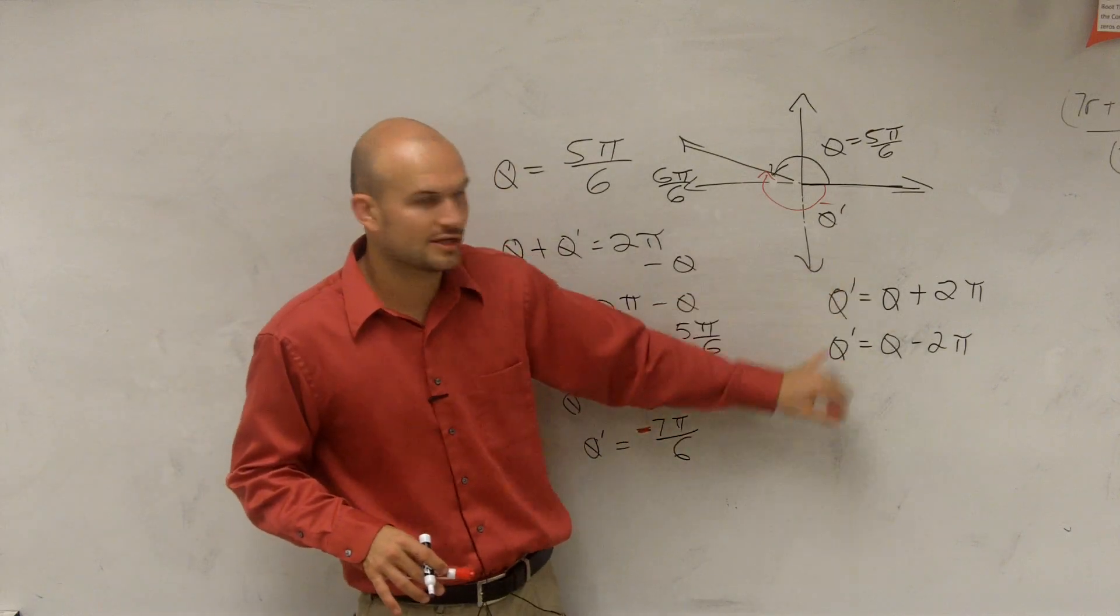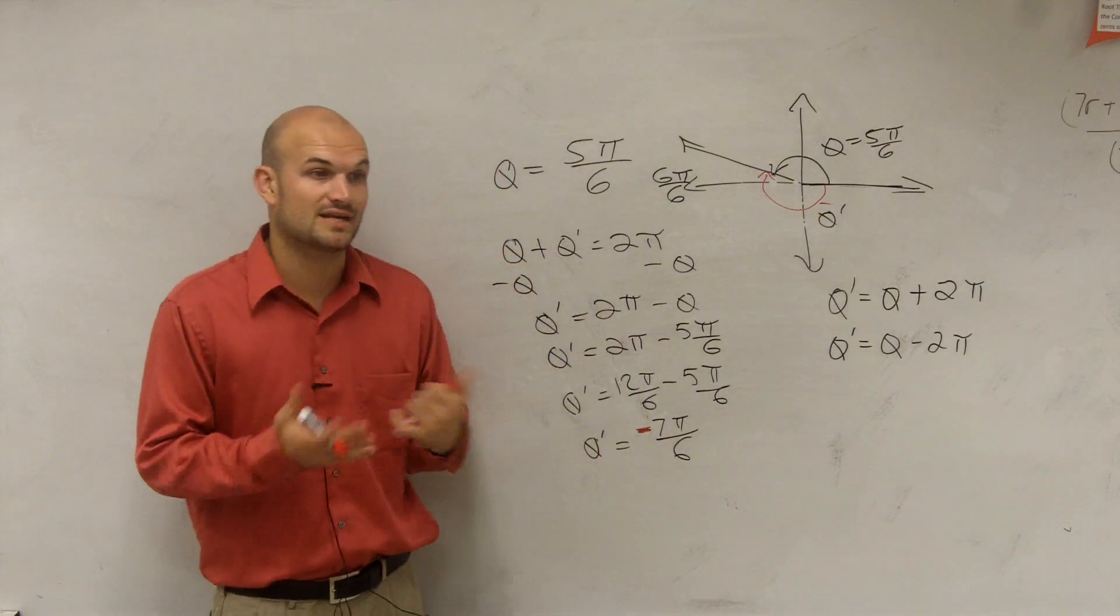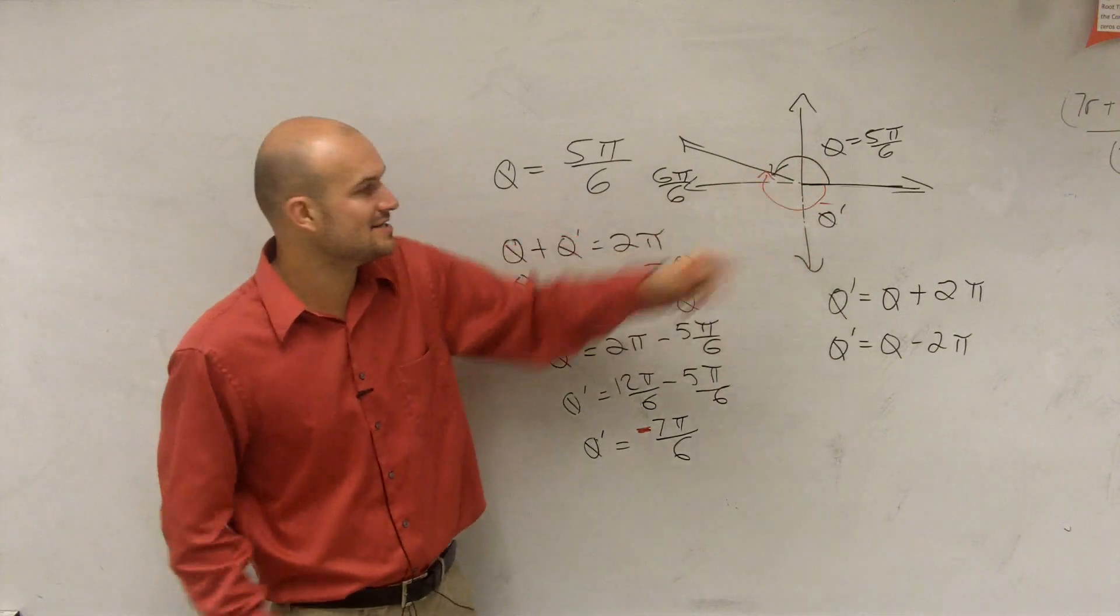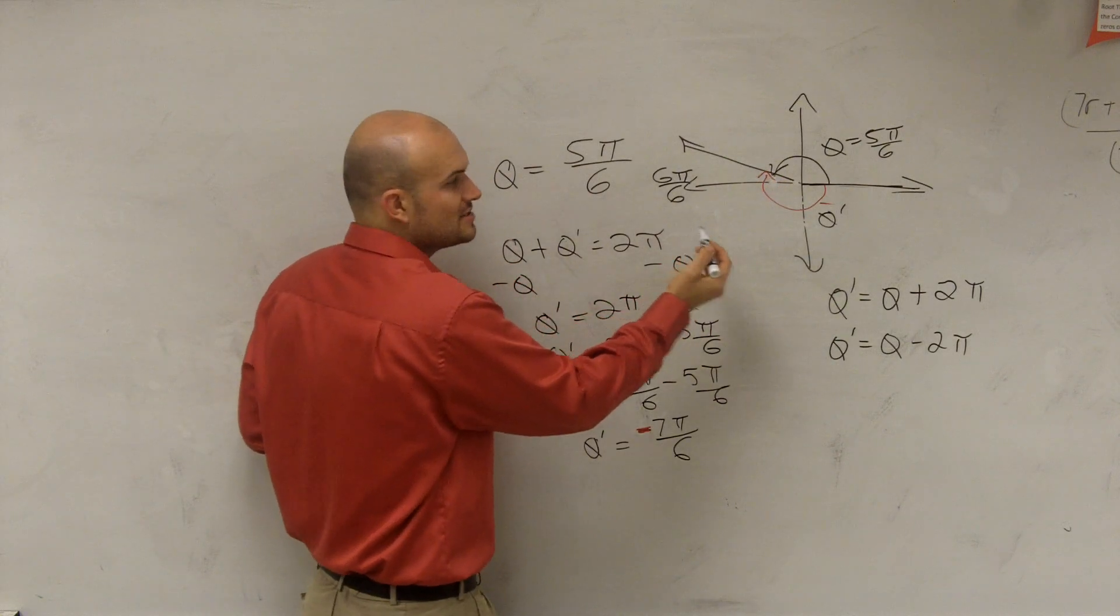But yeah, these are like your two formulas you guys can understand, but usually on a test I'm going to ask you to find the negative and the positive. So here's the negative. So if I want to find that positive, you can look at your angle and say, all right well I already did it this way, and I already did it this way. What are the ways you can do it?